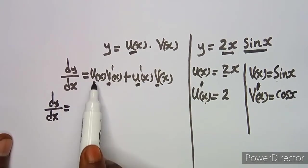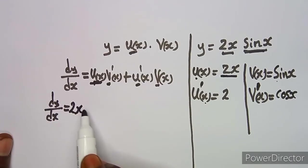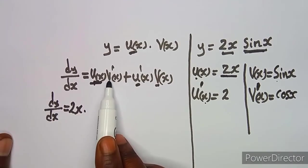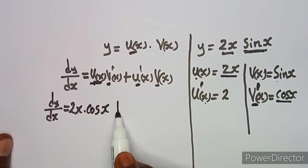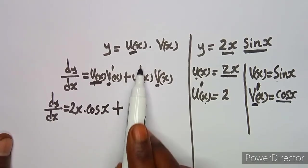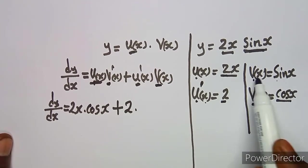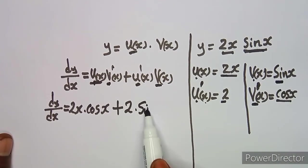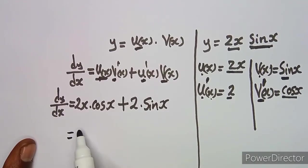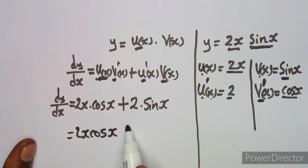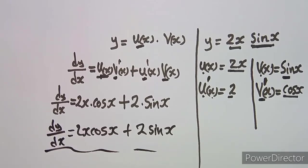Now let's substitute into the formula. dy/dx is equal to U(x) times V'(x), so that's 2x times cos(x), plus V(x) times U'(x), so that's sine(x) times 2. You can factor out 2 if you want, or you can just leave it as 2x·cos(x) + 2·sin(x). That's your dy/dx. It's still fine to leave the answer like that. That's the product rule and how you apply it.